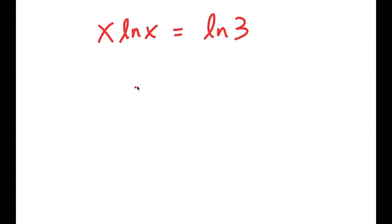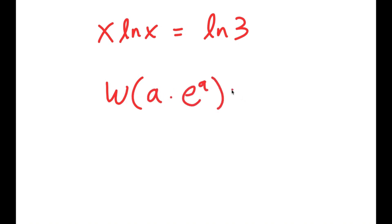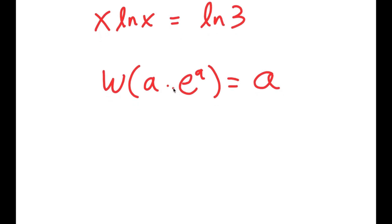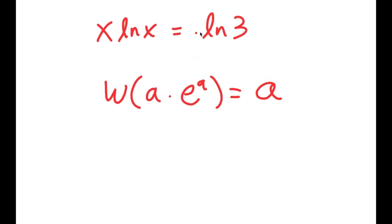Now I'm going to use an important formula called the Lambert W formula. It states that if I take the W of something in the form a times e to the power of a, then this is equal to a. So I'm going to rewrite this so that it suits the Lambert W formula — we need to change this to be in the form a times e to the power of a.